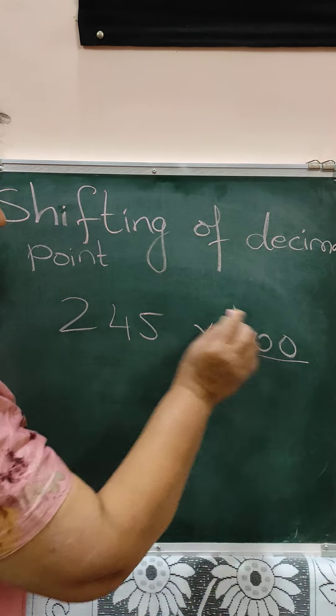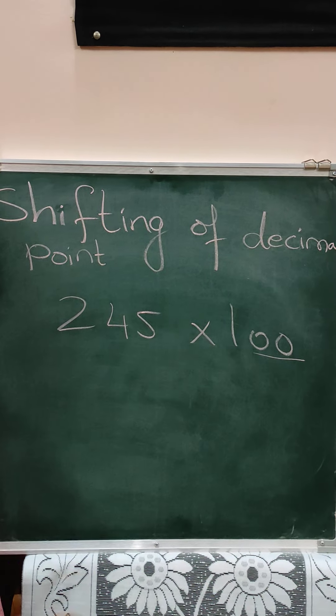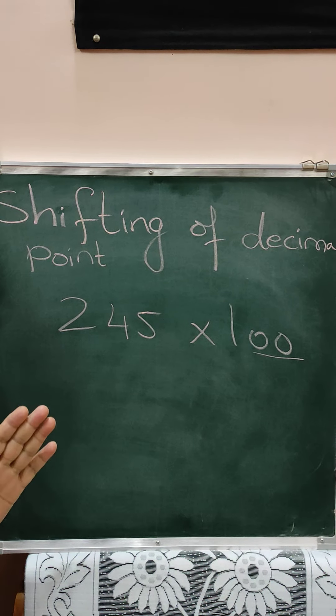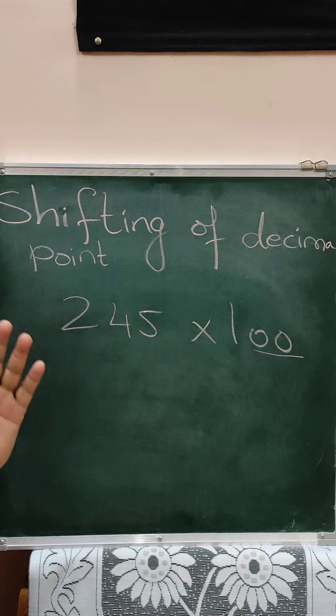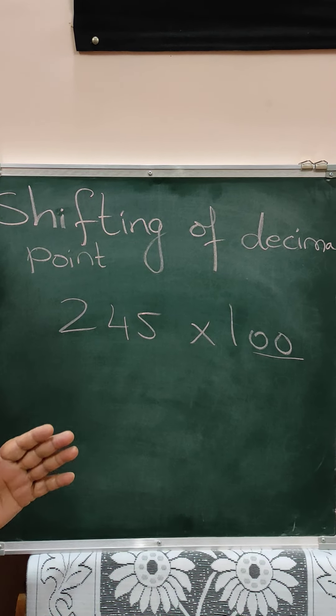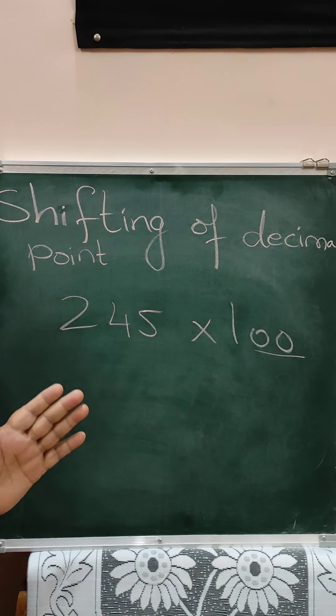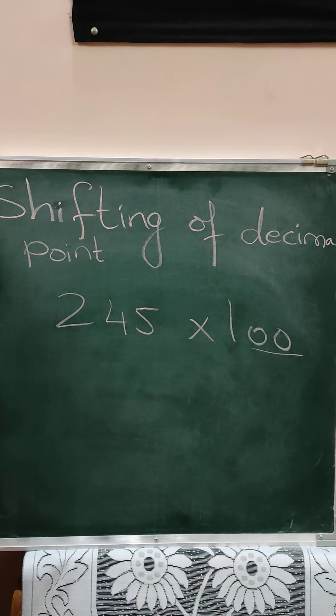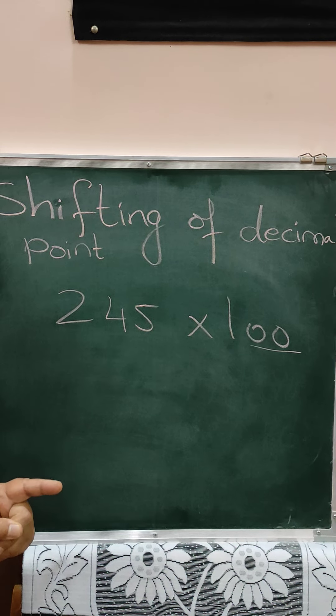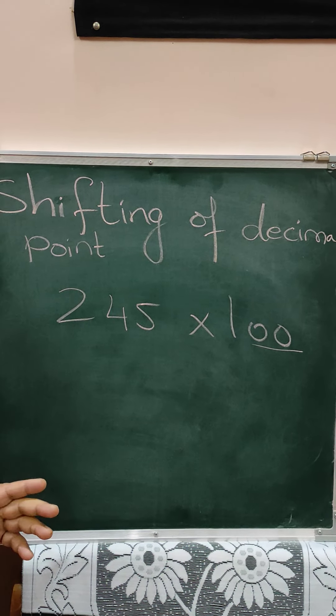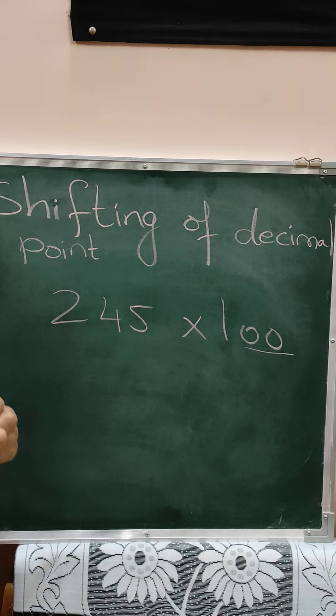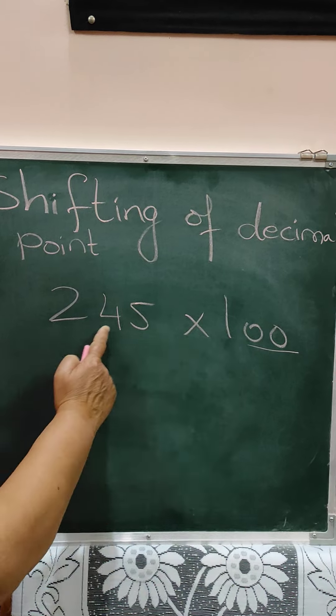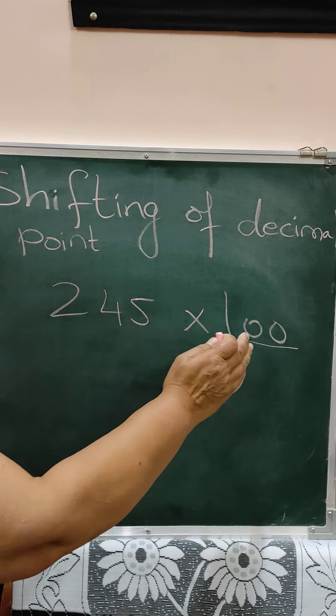Now there are two zeros and there is one. You know with one, any number multiplied by one gives you the number itself. We have learned this, this is identity of one. And identity of zero is, any number multiplied by zero is zero. So these two identities, any number multiplied by one is number itself, and any number multiplied by zero is zero. This you have to keep in your mind.